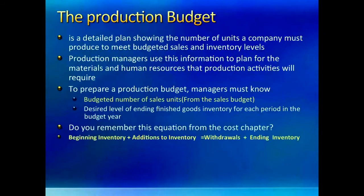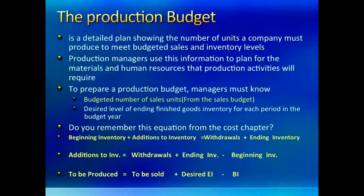Before making the production budget, it is useful to recall the cost flow concept. In any inventory account, the debit side has beginning inventory plus what comes into the account, and the credit side has ending inventory and what goes out of the account. Debit side and credit side must equal each other. We can rearrange this equation to solve for what must be added to inventory. In the current context of the production account, what we add is units produced, and what goes out is units to be sold. So we can reinterpret this general equation to solve any production budget problem.